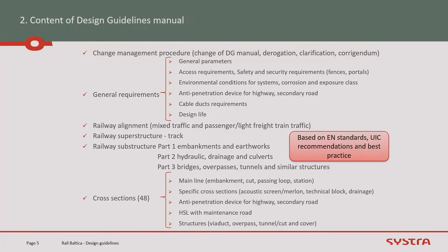Now the different terms of the design guideline — and there are quite a lot. To start with, we have the change management procedure. We are defining a design guideline, but we can have evolution in the norms and changes, so the first point is to identify how this design guideline can evolve in the future if required. We also have derogations, which may be required for some portions of the line due to very specific conditions.